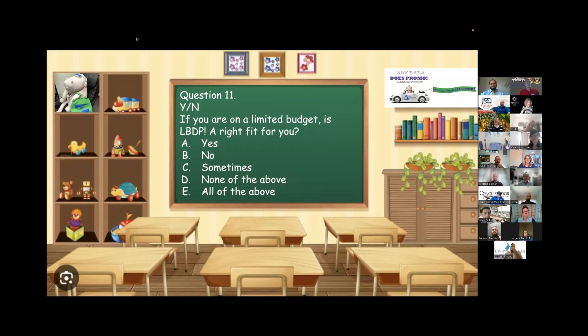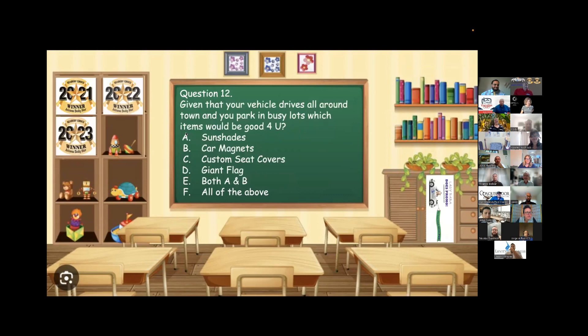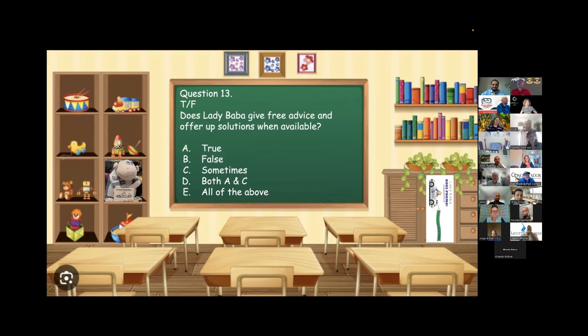Question 12. Ken Frederick. Your question is, given that your vehicle drives around all around town and you park in busy lots, which items would be good for you? A, sunshades. B, car magnets. C, custom seat covers. D, a giant flag. E, both A and B or F, all of the above. Wow. Custom seat covers wouldn't work because I don't like people looking in my car, but A and B sounds really good. The correct answer. E, A and B, sunshades, which Ken has purchased. I do. Yeah. So that was a perfect. Yeah. I didn't even plan that.